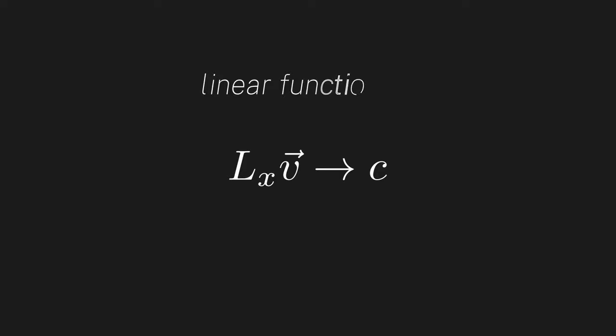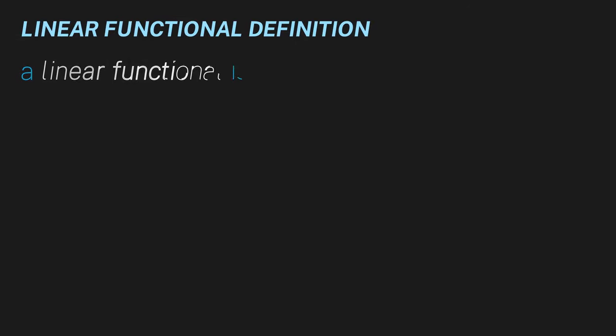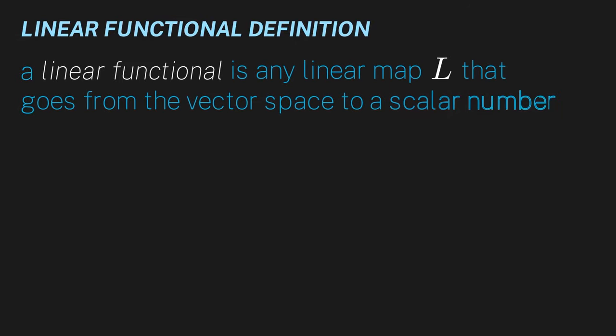Now let's understand what this linear map is doing. Fundamentally, this map takes in an element of our vector space and returns a single scalar number. We have a special name for maps that do this. They are called linear functionals. Formally, a linear functional is any linear map L that goes from the vector space to a scalar number, which may be real or complex. Basically it's any linear map that takes in a vector and spits out a number.